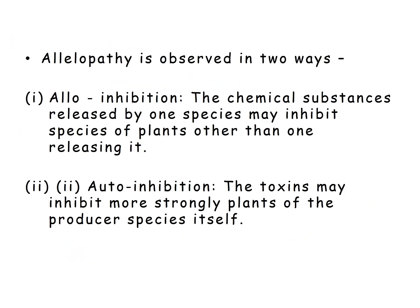Allelopathy is observed in two ways. First is allo-inhibition: the chemical substances released by one species may inhibit species of plants other than the one releasing it — one species releases toxins and the other species is affected. Second is auto-inhibition: the toxins may inhibit more strongly the plants of the producer species itself.